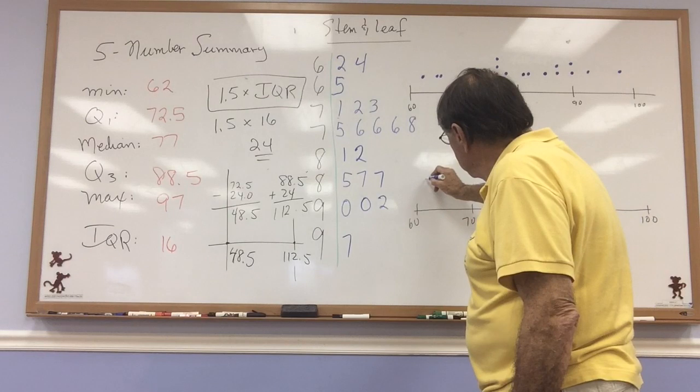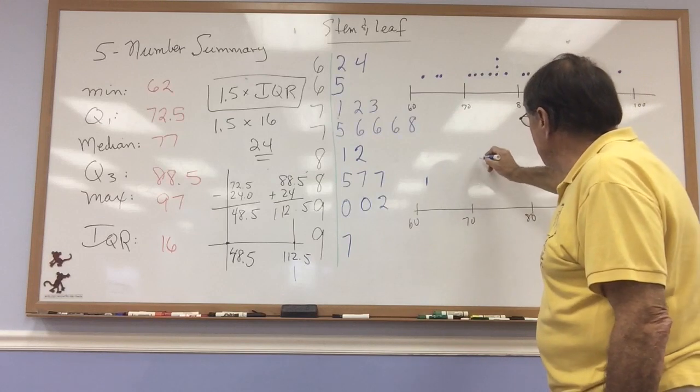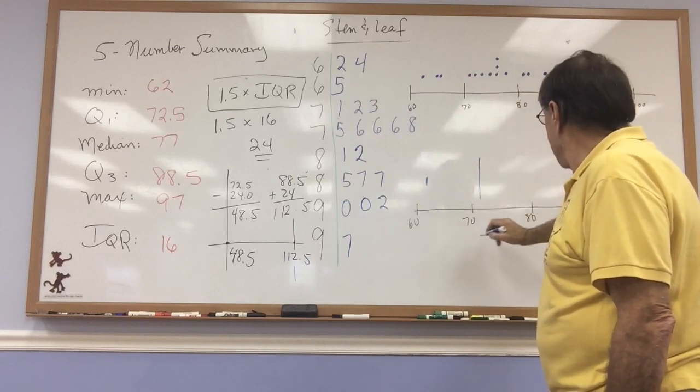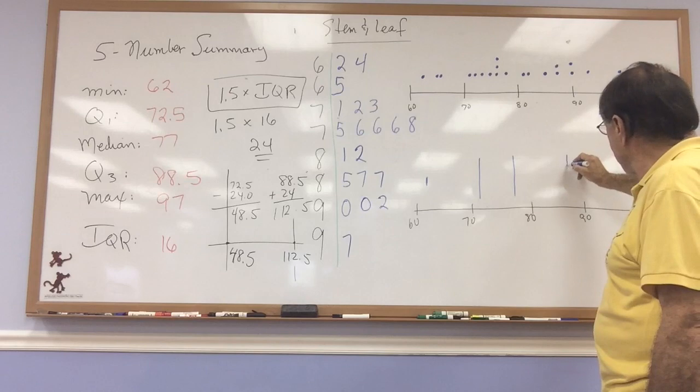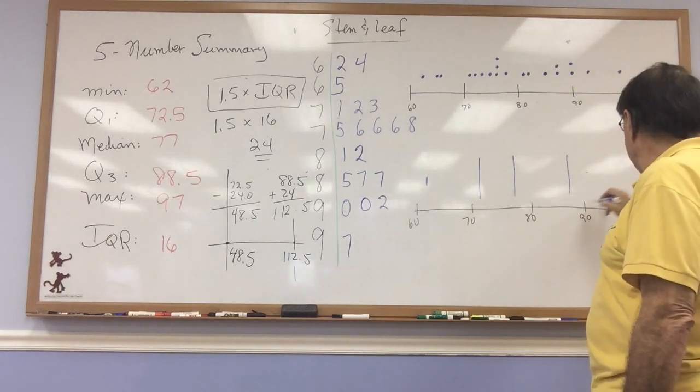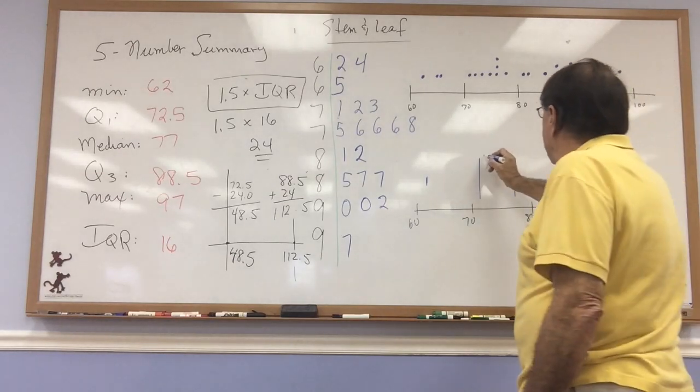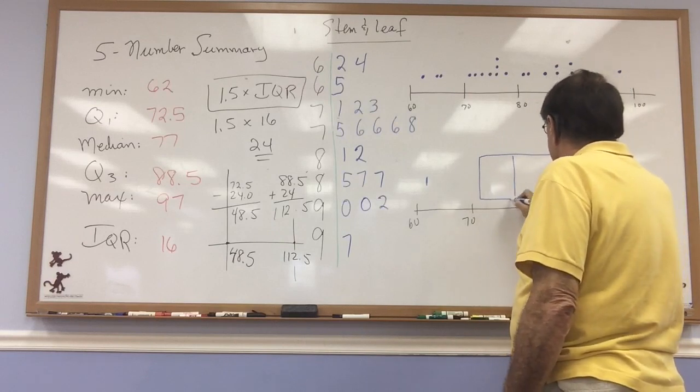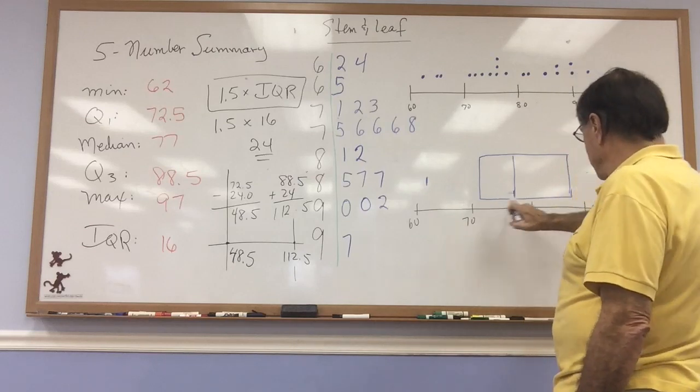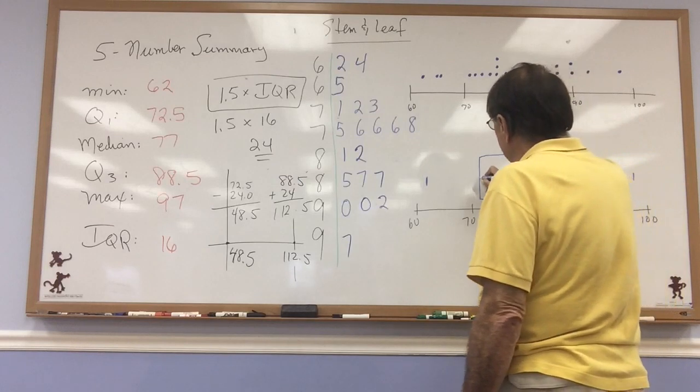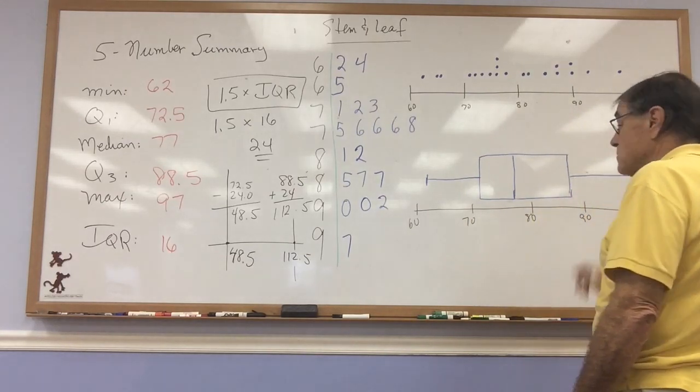My minimum is at 62. My first quartile is at 72.5. My median is at 77. And my third quartile is up here at 88.5. And my maximum is up here at 97. So now, to finish the plot, I construct a box that represents the interquartile range from Q1 to Q3. I construct a whisker from Q1 to the minimum, and from Q3 to the maximum. And this is my box plot.